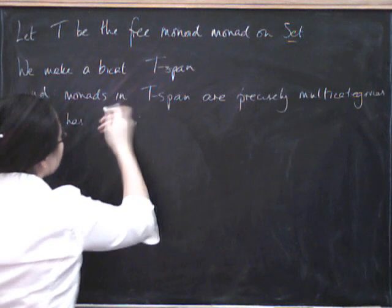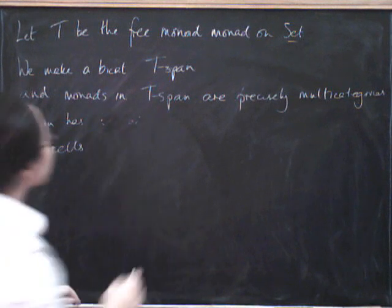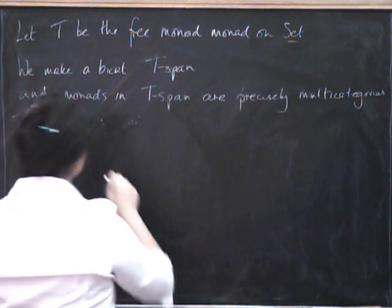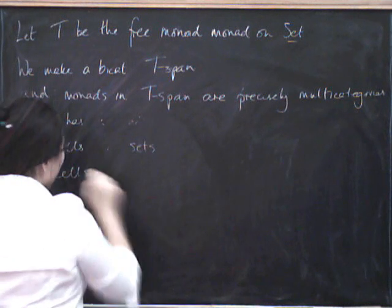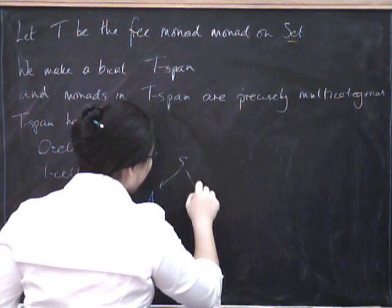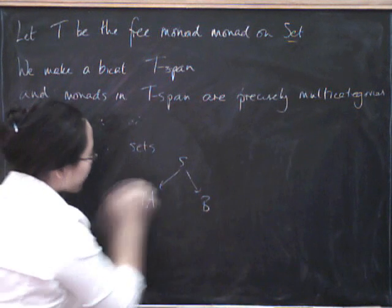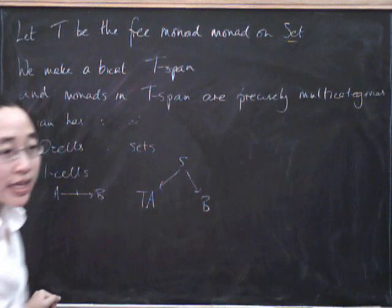It has zero cells, just as before. The zero cells are the objects of our underlying category, which are sets. They're just sets. The one cells are going to be spans. Remember we had, before, our spans look like this. But now we're going to stick a T over here. And that's what a morphism, a one cell from A to B is going to look like.